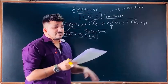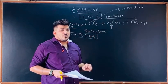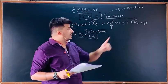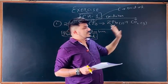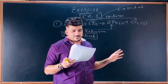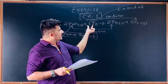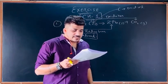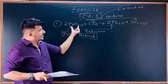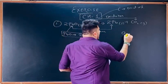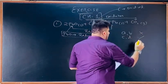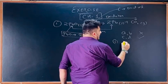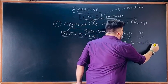Now, which statement is wrong? Option A says 'lead is getting reduced' — but lead (Pb) is on the product side. We look from the reactant side. So lead is not getting reduced on the reactant side. Option B: 'carbon dioxide is getting oxidized' — CO₂ is also on the product side, so that is wrong. Carbon is getting oxidized — that is correct. Lead oxide is getting reduced — that is correct. So statements A and B are incorrect.